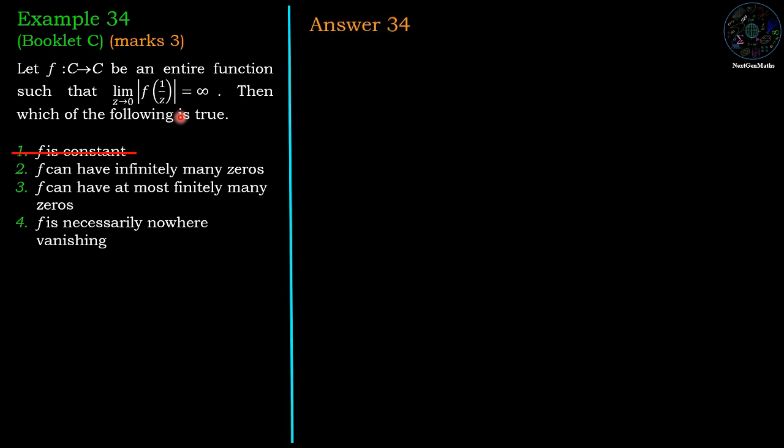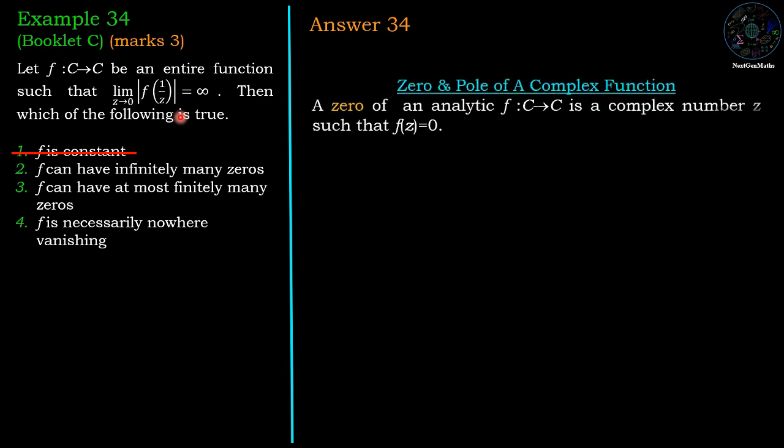For other options we should recall some concepts of complex analysis: zeros and poles. First, a zero of an analytic function f: C→C is a complex number z such that f(z) = 0. And a pole of f is a zero of 1/f.